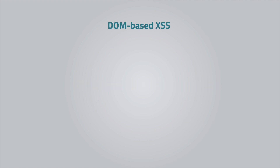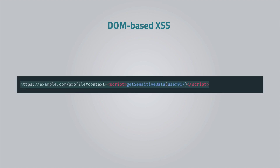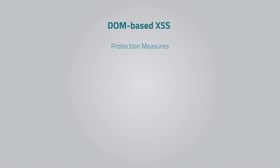The next XSS attack is called DOM cross-site scripting. This type became prevalent with the advent of rich front-end applications. Single-page applications use the DOM in a very dynamic and complicated way, and thus detecting this type of attack is more difficult than the previous ones, because it requires deep knowledge of the DOM's inner workings. DOM attacks make use of the URI fragment to pass malicious code. The best way to protect against this attack is to escape dynamic content in URI fragments.